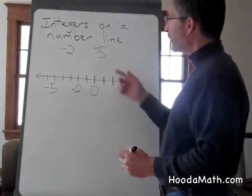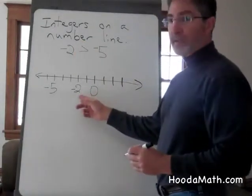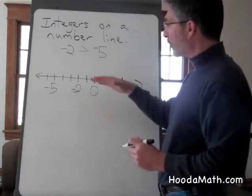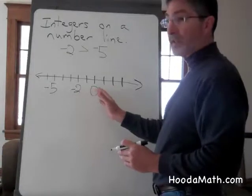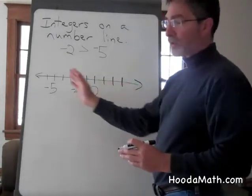Therefore, negative two is larger than negative five because negative two is to the right of negative five. Positioning on a horizontal number line, as numbers get larger, they go to the right. Numbers that are smaller are to the left.